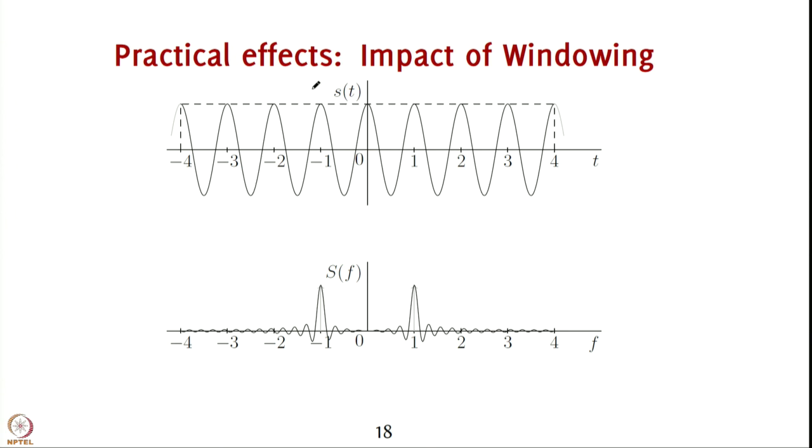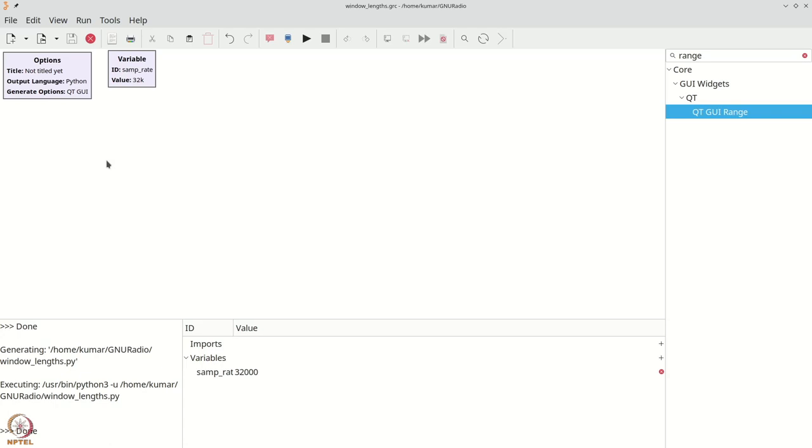This is something which we can observe practically in GNU radio as well. Let us now take a quick detour to see how spectral lines appear on GNU radio and how different FFT window sizes affect the spectrum. To do this, we start with a simple GNU radio example where we first get a signal source.